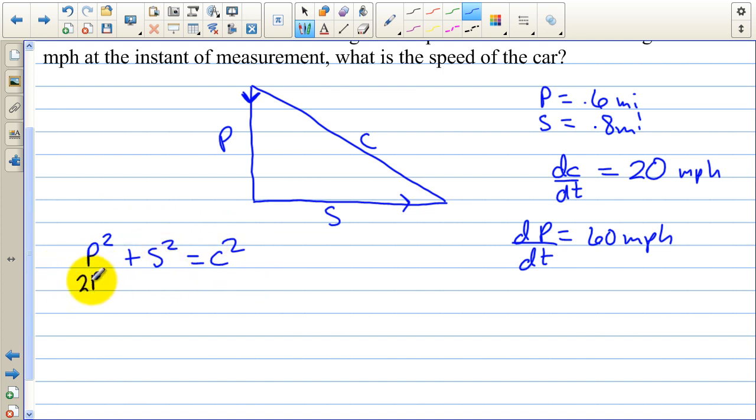So the derivative is 2P times DP DT plus 2S DS DT equals 2C DC DT. And I made a mistake here. I even talked about it before. This side is getting smaller as the police get to the intersection. So the mistake I made is that this needs to be a negative 60 miles per hour. That's going to be important when you plug values in. Note on the derivative, everybody has a 2, so I can divide everything by 2, and I'm not going to worry about the 2s anymore.